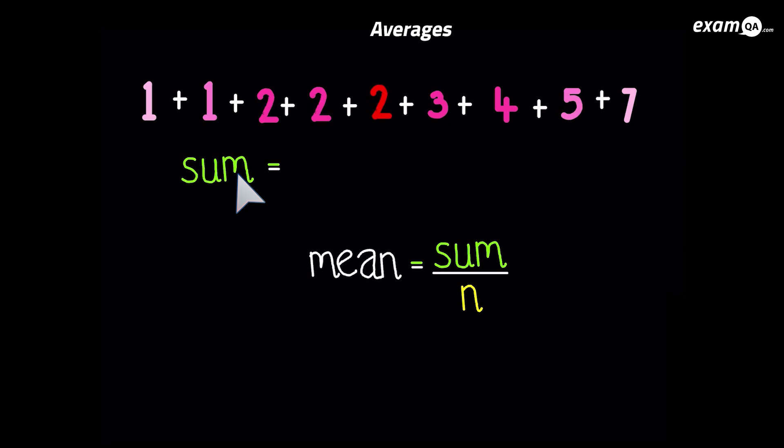So you could do this on mentally or you can use your calculator. And you should have got 27. All these numbers add up to 27. Now what is n? Because that's the next thing we need for the formula. Sum over n. Which works out the mean. Now n is just how many values you've got. And if you count them, we've got nine values here.